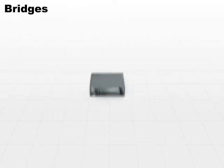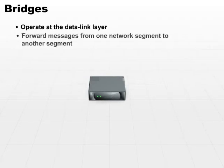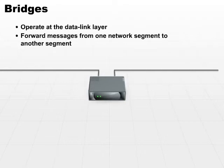The next network device is a bridge. A bridge operates at the data link layer. What it does is forward messages from one network segment to another network segment, and it is used to bridge two different networks that may be using totally different protocols.